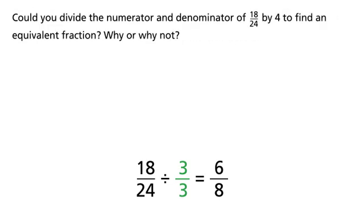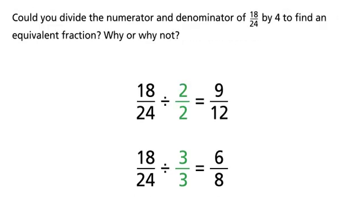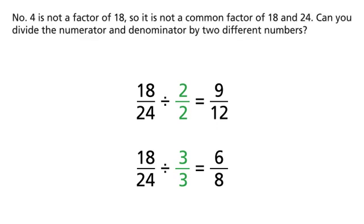Could you divide the numerator and denominator of 18 24ths by 4 to find an equivalent fraction? Why or why not? No — 4 is not a factor of 18, so it is not a common factor of 18 and 24.